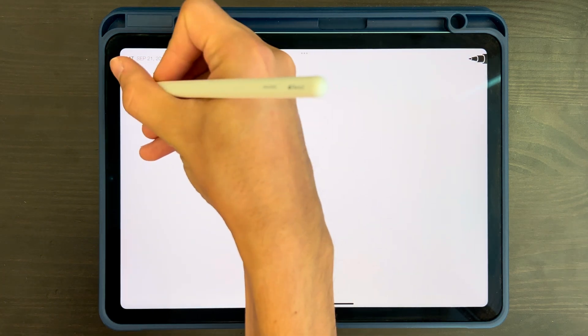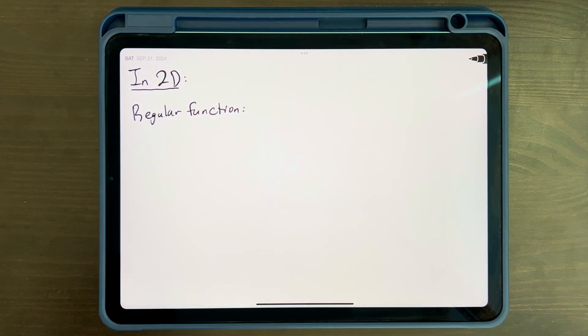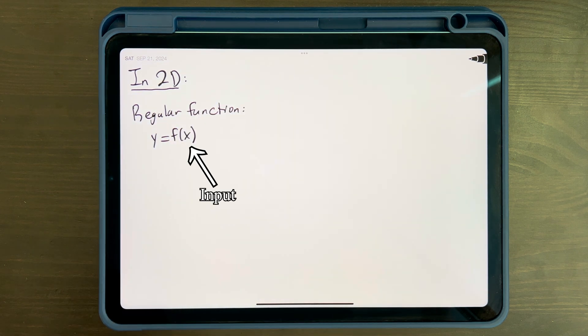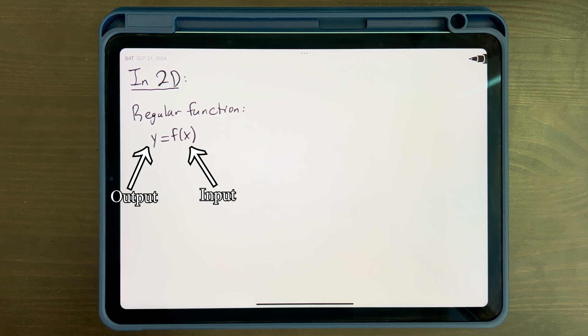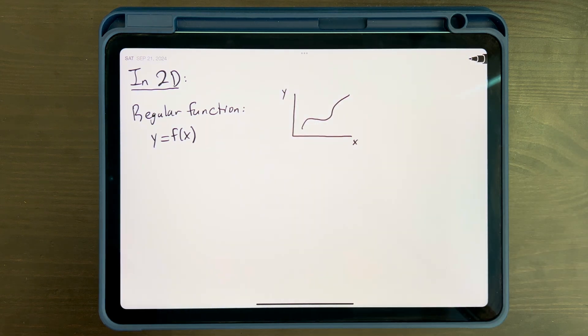Let's look at the 2D case. What I would call a regular function in 2D can be generally written as y equals f of x. On the right-hand side, we have some expression of an input variable, x, which is equal to our output variable, y. This function can be represented by a line in 2D space.